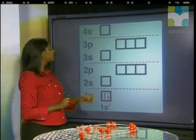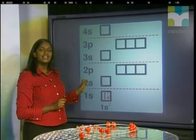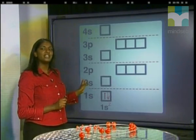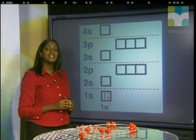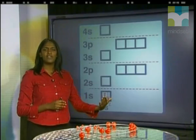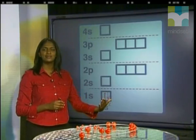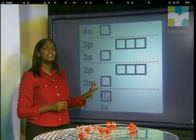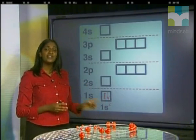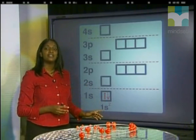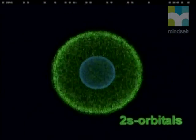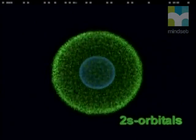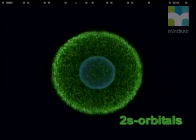The second energy level corresponds to the second orbit. The electrons in the second energy level are further away from the nucleus. This second energy level has two sublevels. The lowest sublevel contains an S-orbital — we call this the 2S sublevel. Notice it has the same spherical shape as the 1S orbital.